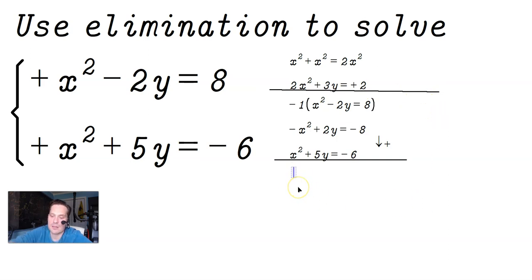So negative x squared plus x squared is 0. It's gone. 2y plus 5y is 7y. That's useful. So only one variable remains. Negative 6 plus negative 8 is negative 14.